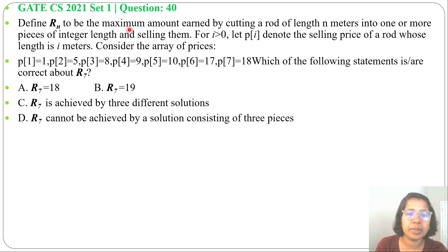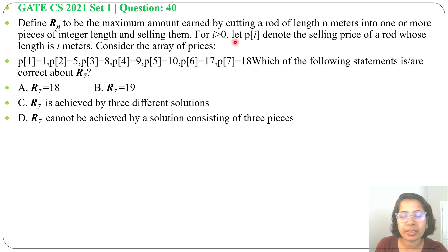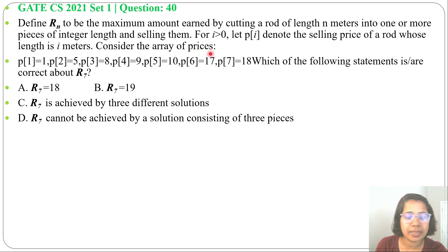Define R(n) to be the maximum amount earned by cutting a rod of length n meters into one or more pieces of integer length and selling them. For i greater than 0, let P(i) denote the selling price of a rod whose length is i meters. Consider the price array: P(1)=1, P(2)=5, P(3)=8, P(4)=9, P(5)=10, P(6)=17, P(7)=18.